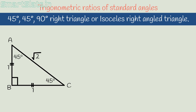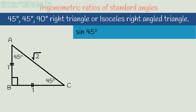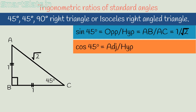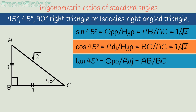Sin 45° equals opposite side over hypotenuse. With respect to angle at C, the opposite side is AB and the hypotenuse is AC, so sin 45° = AB/AC = 1/√2. Cos 45° equals adjacent side over hypotenuse: BC/AC = 1/√2. Tan 45° equals opposite side over adjacent side: 1/1 = 1. So tan 45° = 1.